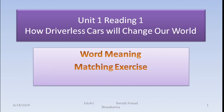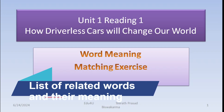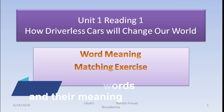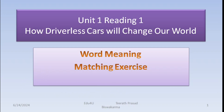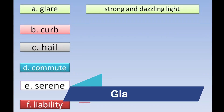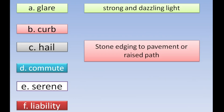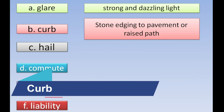This is based on the exercise called the word meaning matching exercise. We have a list of words and their related meanings. Look from the beginning to the end and see how the word and the meaning are used in the passage. The word 'glare' means strong and dazzling light.